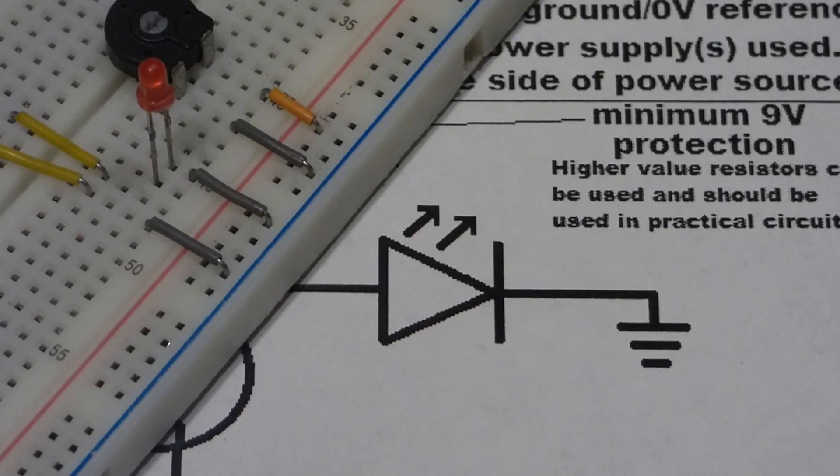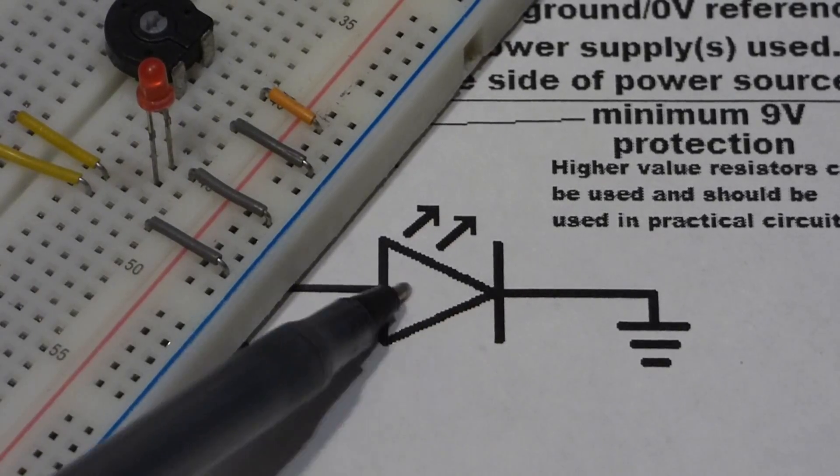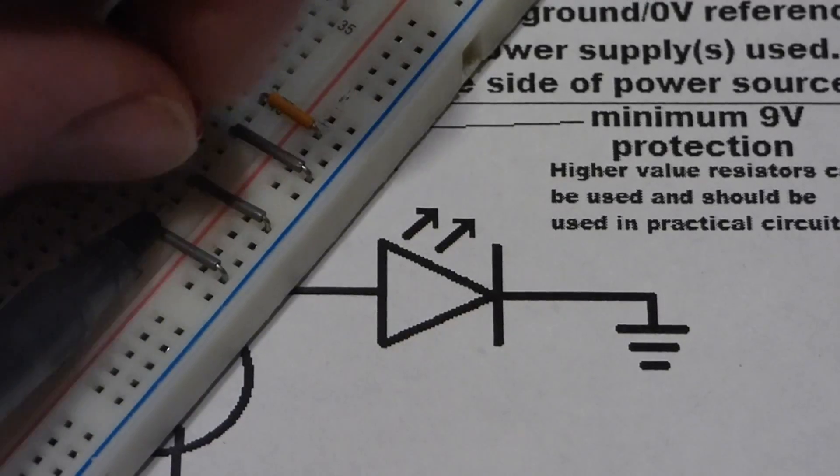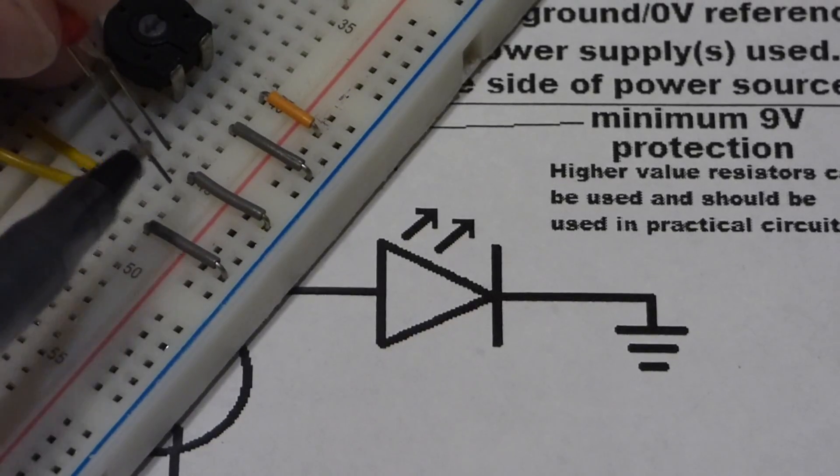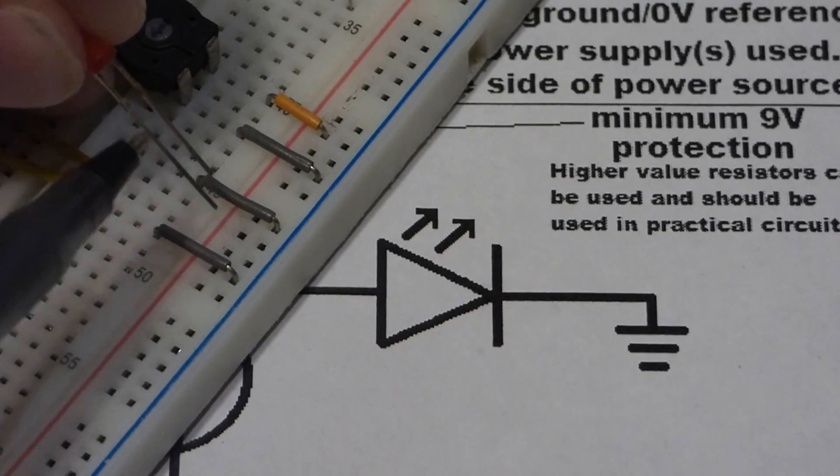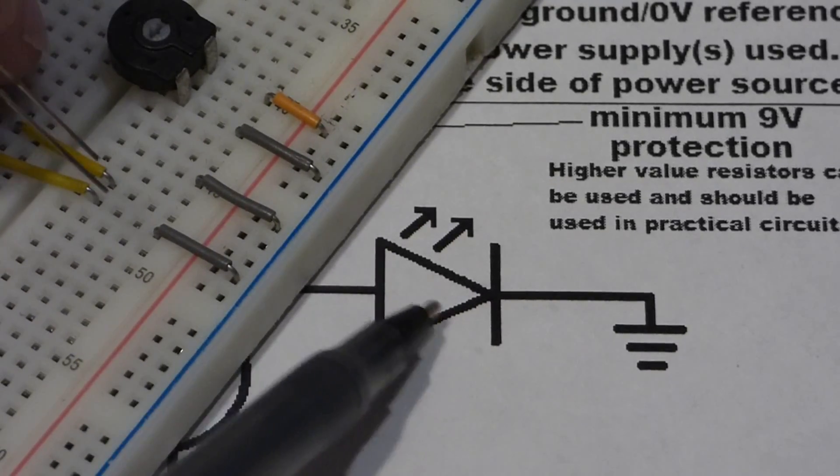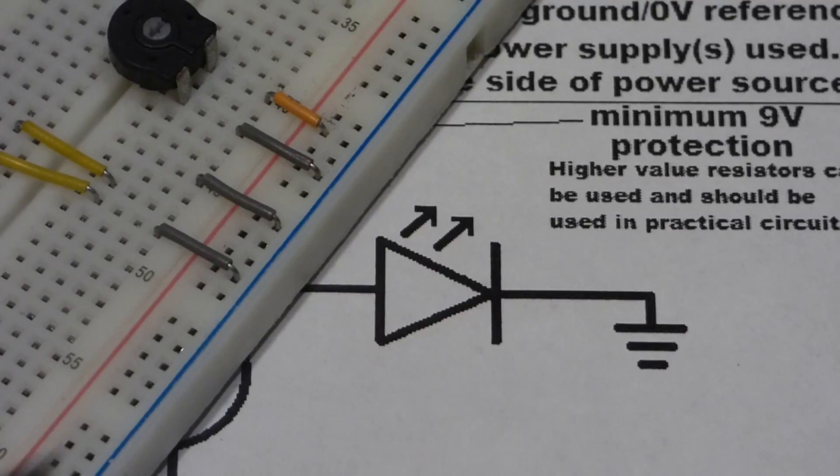Now I moved the resistor so we can get a better look at the diode here, or load. The cathode here, this is the short lead of the LED, as you can see here. It has a short lead and a long lead. Diodes are polarized. You have to put them in the right direction in the circuit.